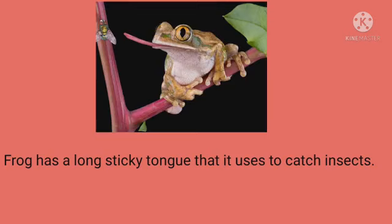Animals and birds also have a tongue. For example, as you can see in the picture, the frog has a long sticky tongue that is used to catch insects with.